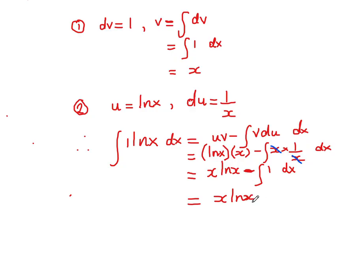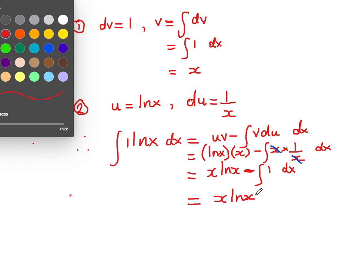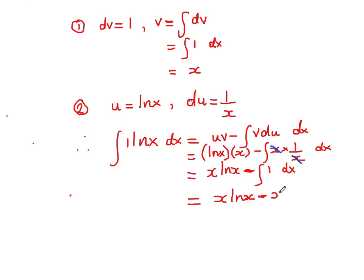Let us now consolidate this problem by completing the final integration and simplification. This becomes x·ln(x), which remains unchanged, minus the integral of 1 with respect to x. Since we're integrating 1 with respect to x, it gives us x. And because this is an indefinite integral — there are no upper and lower limits on the integration sign — we add the constant of integration, using either k or c. So our final answer is x·ln(x) minus x plus k.